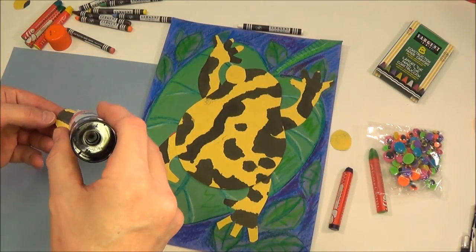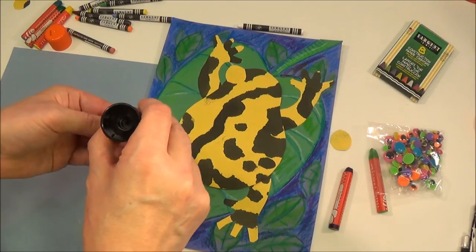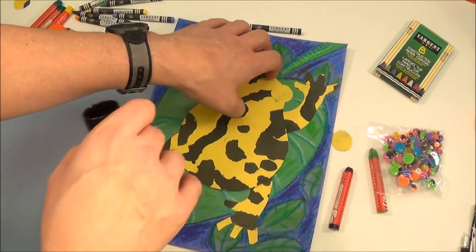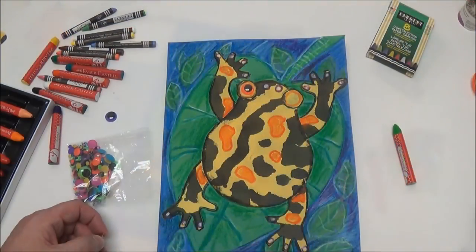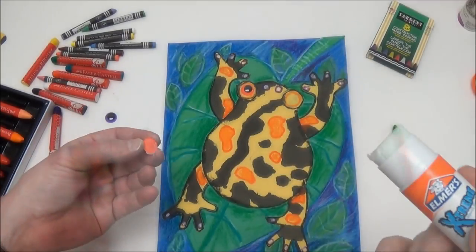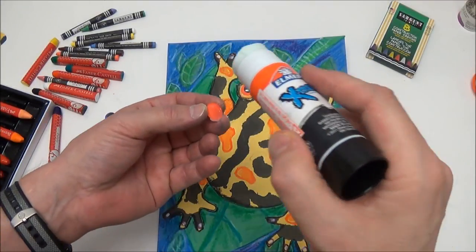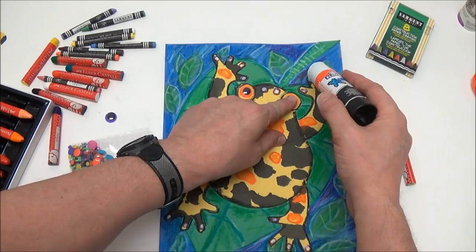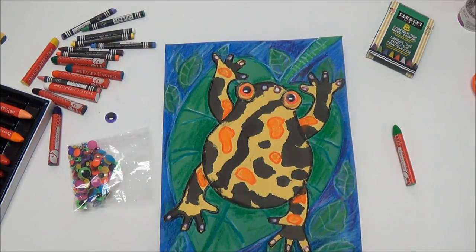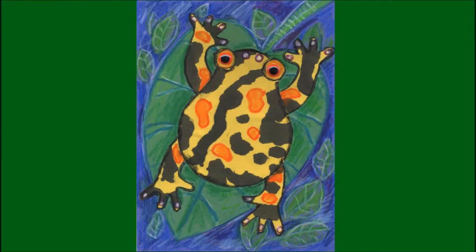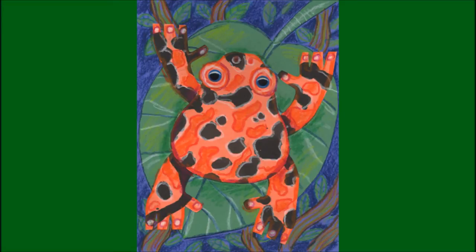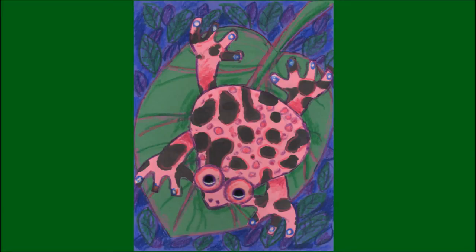Glue the eye circles onto the head of the body. Use crayons to add additional details to the frog. Finish by gluing two colored wiggle eyes to the eye circles.